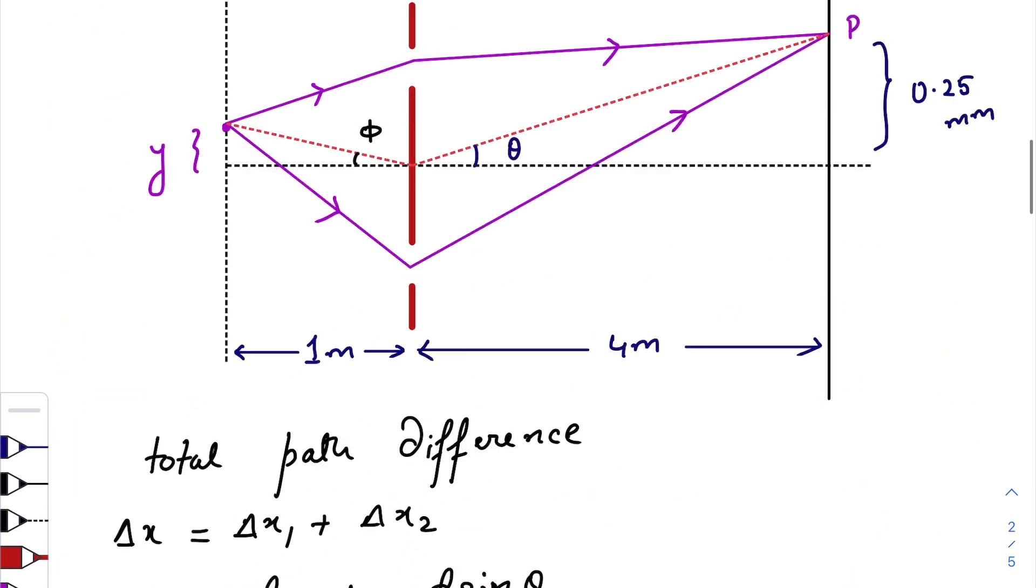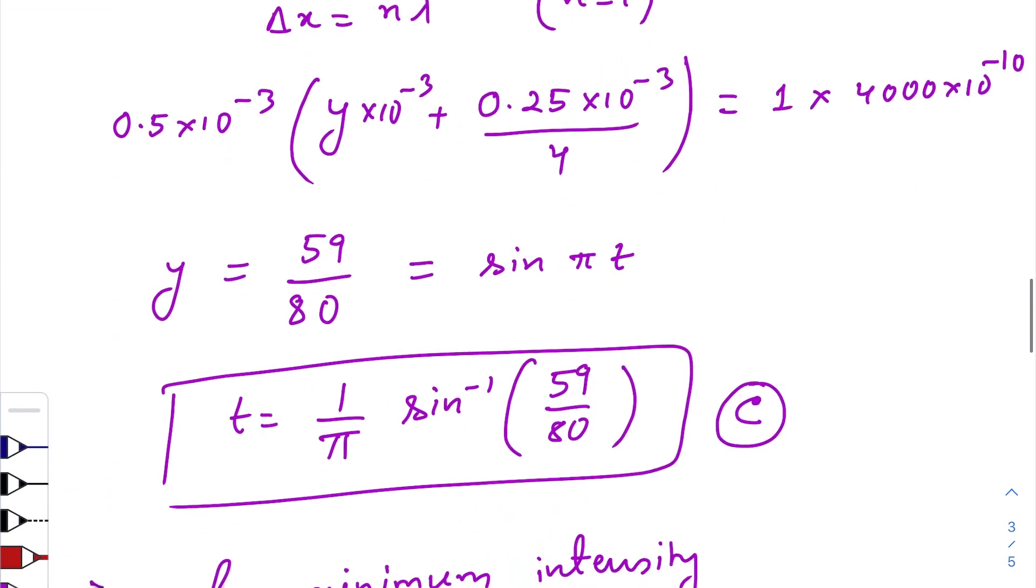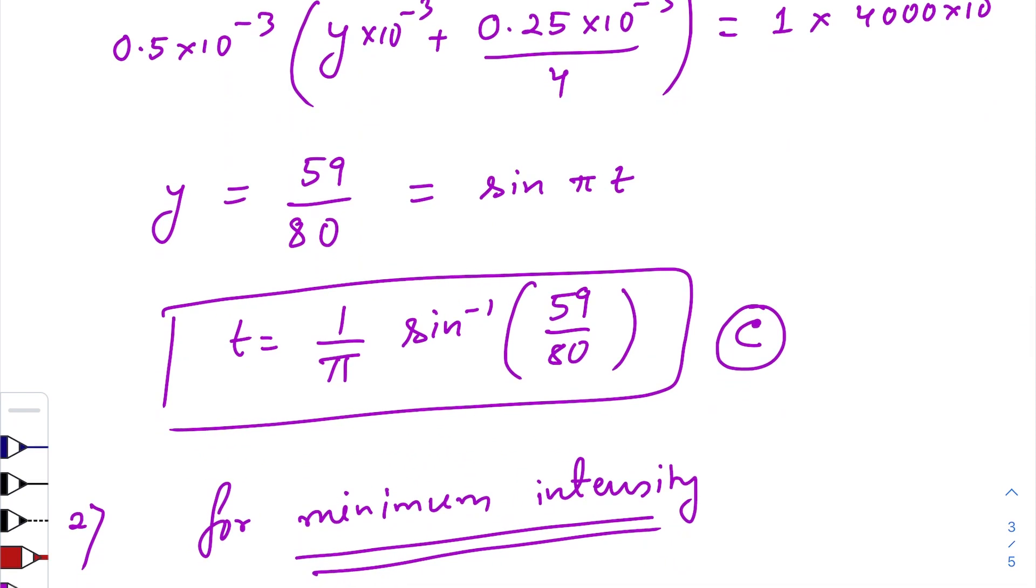Now, unfortunately, if we see that none of the options are matching for n equals to 1, we'll just put n equals to 2, 3, 4 and we'll keep on going because sometimes we need to check with the options also.